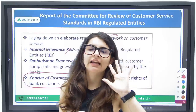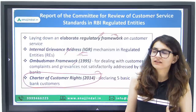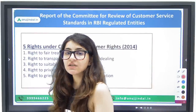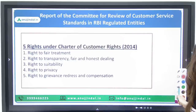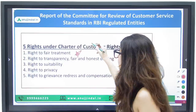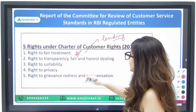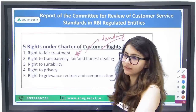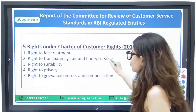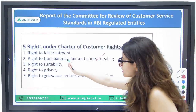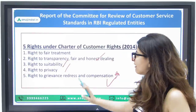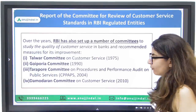The Charter of Customer Rights, formed in 2014, gives banking customers five rights: right to fair treatment, right to transparency and fair and honest dealing, right to suitability, right to privacy, and right to grievance redressal and compensation.